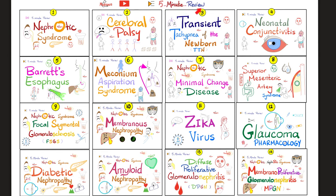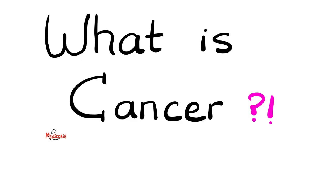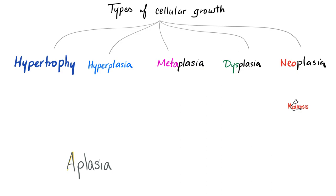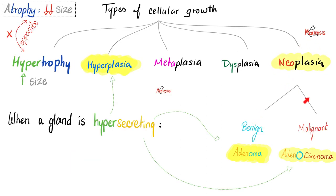Please watch the videos in this playlist in order. First, what is cancer? Cancer is a mass. Cancer belongs to neoplasia. Neoplasia could be benign or malignant. The benign, such as adenoma, but the malignant is adenocarcinoma. So when I say colonic adenoma, it's benign. But colon adenocarcinoma is cancer.